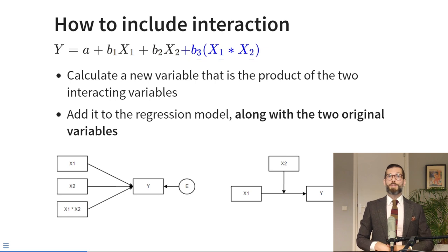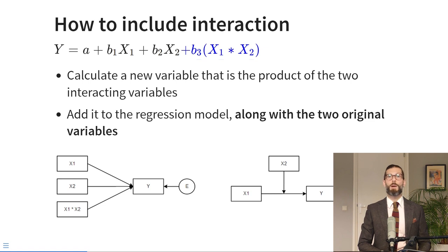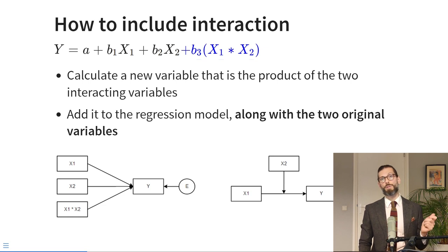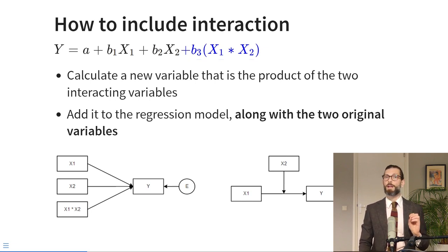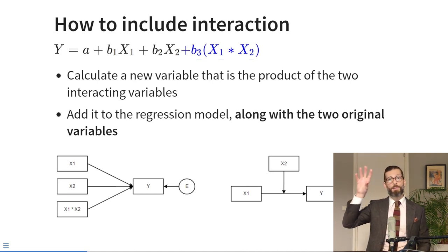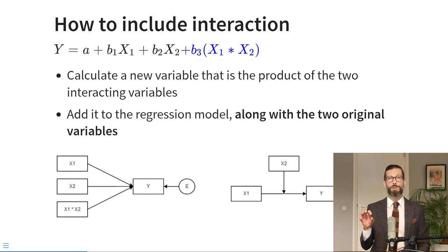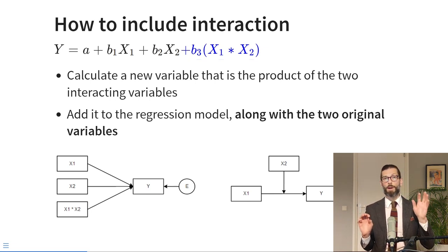We can represent an interaction effect with a box diagram. In previous lectures, we've used these box diagrams to represent the direction of causality. In this case, we think that both predictors x1 and x2 have an effect on the outcome y. Additionally, we have effect modification caused by the product term between x1 and x2. The correct way to represent this is to have three boxes — predictor x1, predictor x2, and the product between x1 and x2 — all with arrows pointing to outcome variable y.